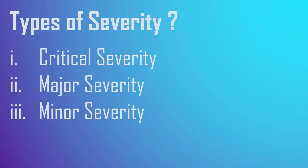Bugs which affect customers are considered critical bugs. Major severity is an issue where a large piece of a feature or major system component is completely broken but there is a workaround to move further. The only difference between major severity and critical severity is that in critical severity we cannot move further, while in major severity there will be a workaround.